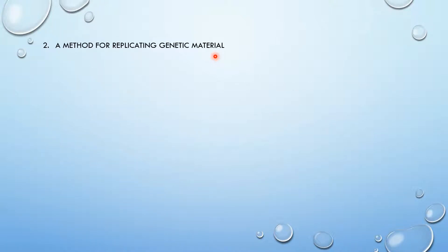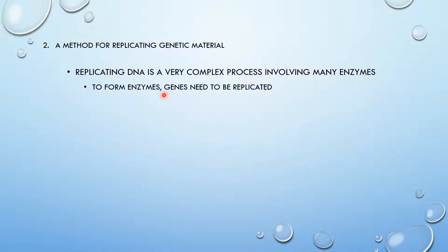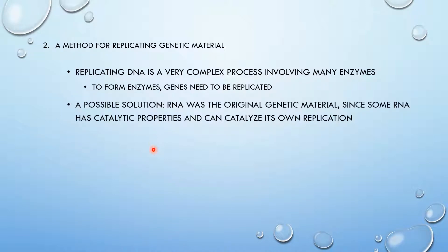Two, the second point is that there had to be a method for replicating genetic material, because if there was a first cell, in order for the second cell to arise, genetic material had to be passed down to our understanding today. Anyways, replicating DNA is a very complex process involving many enzymes. To form enzymes, genes need to be replicated. I kind of rushed through this, so I'll explain it more.